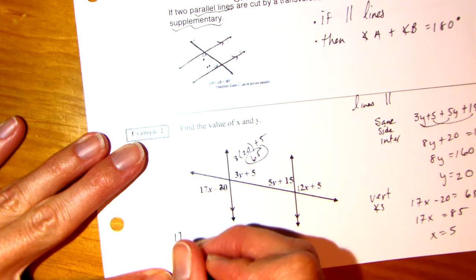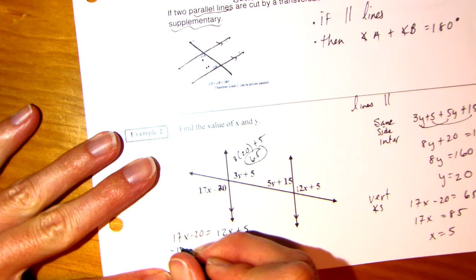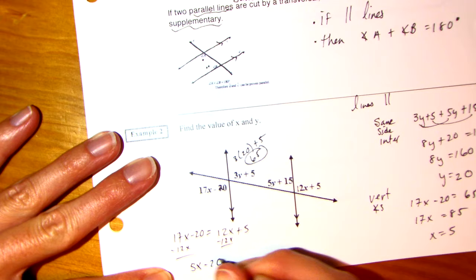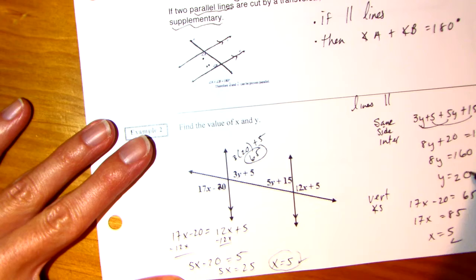Alternate exterior. They should be congruent. 17X minus 20 should equal 12X plus 5. Let's get X's on one side, numbers on the other. So, I'm going to subtract the 12X on both sides. I'll have 5X minus 20 is equal to 5. I'm going to add 20 to both sides. 5X equals 25. X equals 5. So, let's check. So, we have X is 5 and Y is 20.